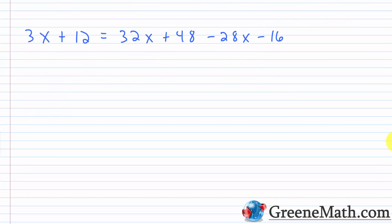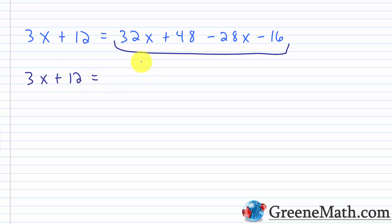Now I want to combine like terms on the right side. On the left I still have three x plus 12. On the right, 32x minus 28x gives me four x, and 48 minus 16 gives me 32. So now each side is as simple as I can make it.